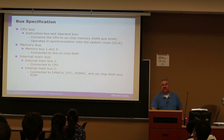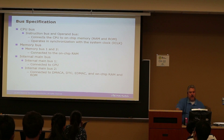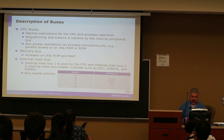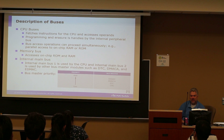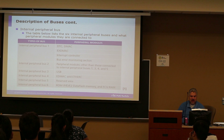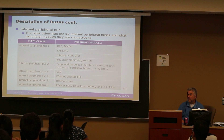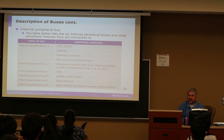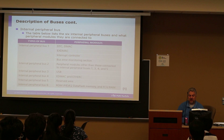Getting back to the RX 63N — the CPU bus: there are all sorts of buses available for the CPU, memory, and the internal main bus, as well as additional bus specifications in the data sheets. There is also an internal peripheral bus. A lot of this is just for your information, because you don't actually specify which buses are used — you are writing software, accessing different peripherals, and the computer hardware itself directs all the data from one peripheral device to another.